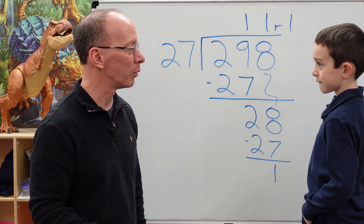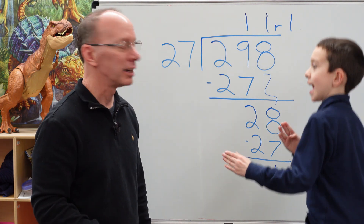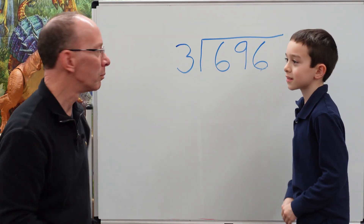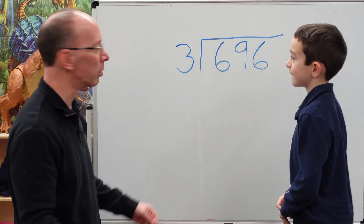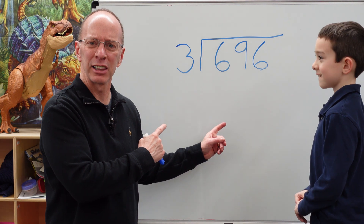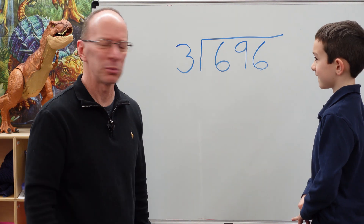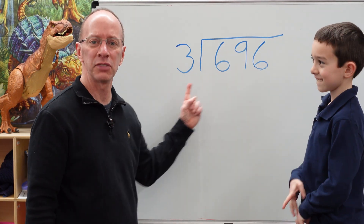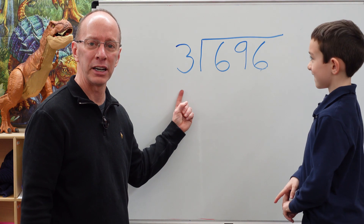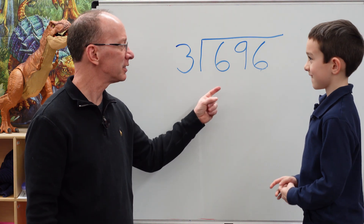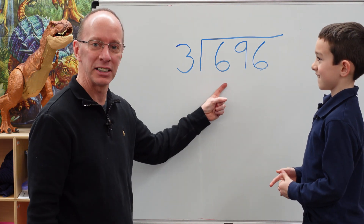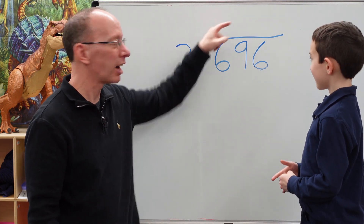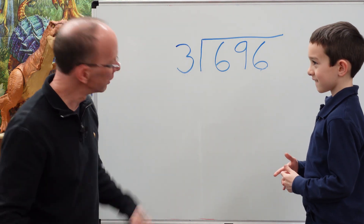Hey, you ready to try one more? Yeah, let's do it! Welcome back. I'm glad you gave me a little bit of an easier problem here. We have 696 divided by 3. This is the dividend, this is the divisor, and our answer is going to be called the quotient. So let's begin.